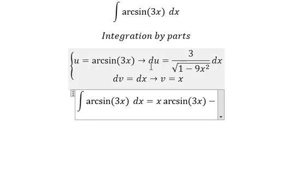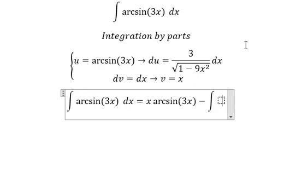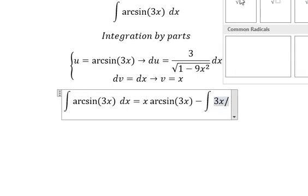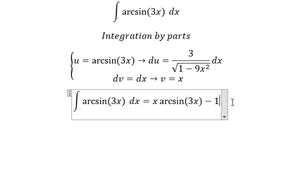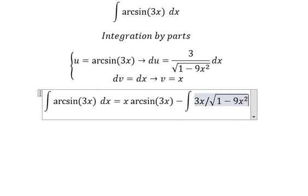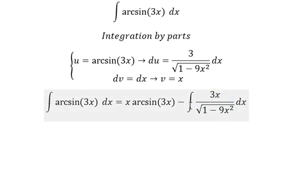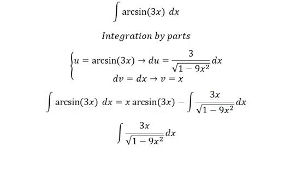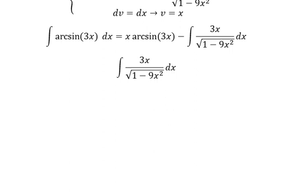Minus the integral of u multiplied by dv. So we have the integration, that is 3x over the square root of 1 minus 9x squared. Now we need to focus on this one, so we can use integration by substitution.